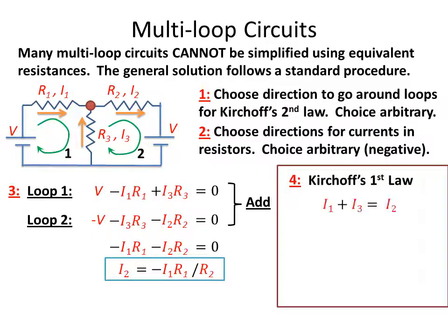The fourth step is to use Kirchhoff's first law on that node up there where the three currents come together. We have two currents that flow into the node, I1 and I3, so I1 plus I3 is equal to the outflow, which is I2.